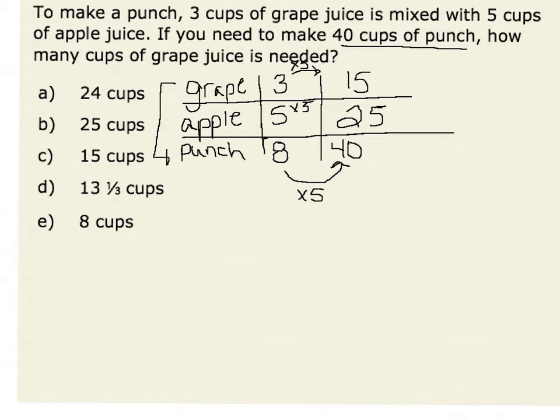I also know that if I took 15 cups of grape juice and added it to 25 cups of apple juice, I would have 40 total cups of punch. Therefore, I know that I need 15 cups of grape juice.